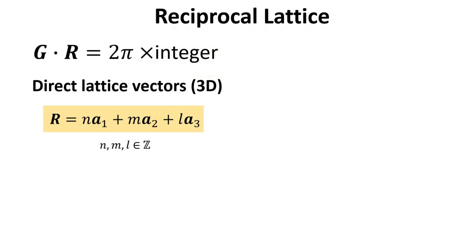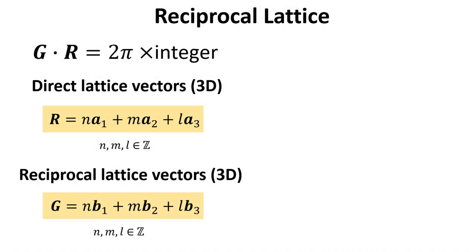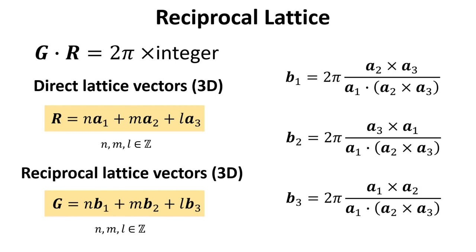Because the G vectors form a lattice, the same formalism for lattices we developed so far is applicable. Given the rule for generating all reciprocal lattice vector points and the set of all direct lattice vectors, it follows that the G vectors can also be written as linear combinations of primitive reciprocal lattice vectors with integer coefficients. This is possible if the primitive vectors composing the direct and reciprocal lattices are related through these identities. They can be shown to obey the general rule by direct substitution.